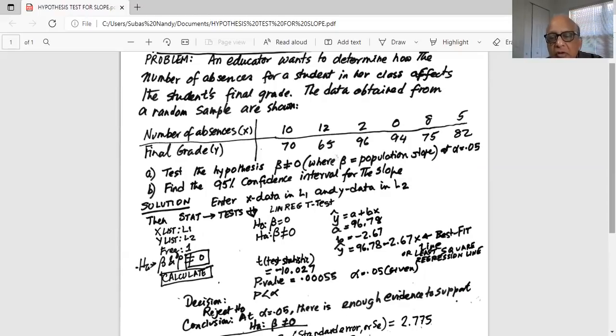So what do you get? You get the regression line equation, which is the best fit line is Y hat is equal to 96.78 minus 2.67 times X. That is a least square regression line equation. And the test statistic T for the alternate hypothesis that we are testing is minus 10.027. Look at the p-value is 0.00055.